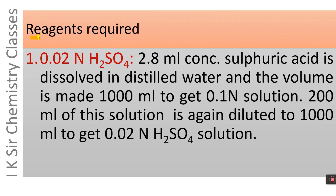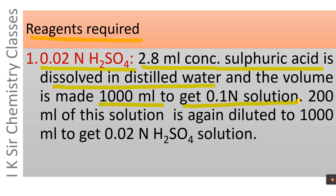Reagents required for this titration. First, 0.02 N H2SO4 solution: 2.8 ml of concentrated sulfuric acid having density 1.84 g/cm³ is dissolved in distilled water and the volume is made 1000 ml to get 0.1 N H2SO4 solution. Then 200 ml of this solution is again diluted to 1000 ml to get 0.02 N H2SO4 solution.